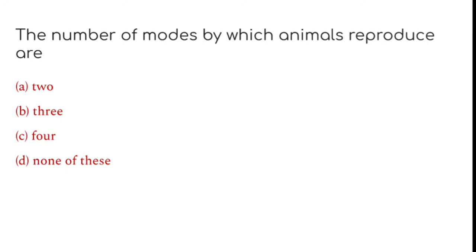The number of modes by which animals reproduce are two.